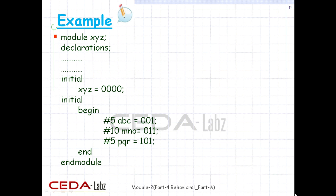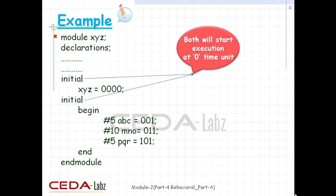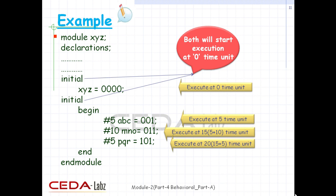In this example, two initial statements start to execute in parallel at time zero. If a hash delay is seen before a statement, the statement is executed that many delay time units after the current simulation time. The initial block starts execution at time zero. The first statement X, Y, Z is executed at zero time units as there is no delay. The next statement A, B, C is executed after a delay of 5 time units.